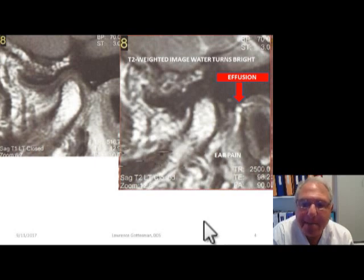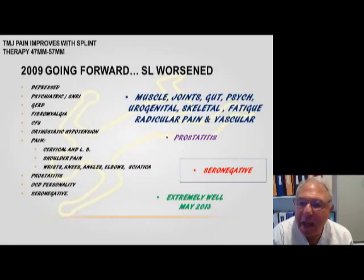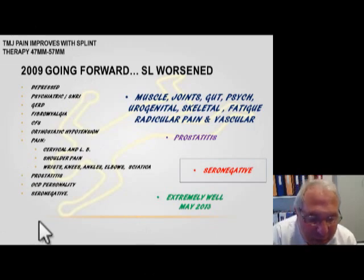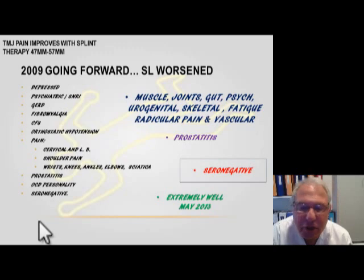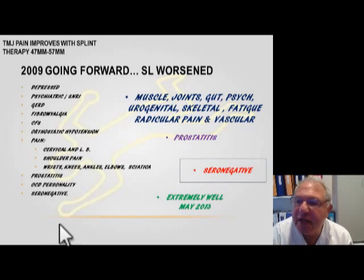At the time I did this study, I wasn't quite as advanced as I am today. Let me show you what the crime scene looks like. I ultimately started splint therapy and he did extremely well — I was able to make improvements in both his pain and his range of motion, going from 40 millimeters up to an interincisal distance of 57 millimeters. But as his life deteriorated and his symptoms deepened, he became depressed and was under the care of a psychiatrist. He became unemployed and collected disability.